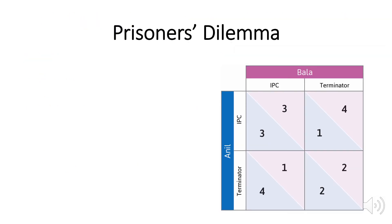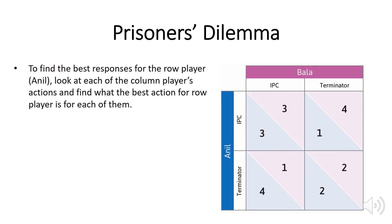Let's have a look at a Prisoner's Dilemma game. In this one, the two strategies for each player are to use an integrated pest control system or an insecticide called Terminator. The integrated pest control is maybe a little more expensive but doesn't pollute the groundwater, whereas the Terminator not only pollutes the groundwater but also kills off any insects released for integrated pest control on the other person's land. So there's a negative effect of one player's actions on the other if that action is Terminator.